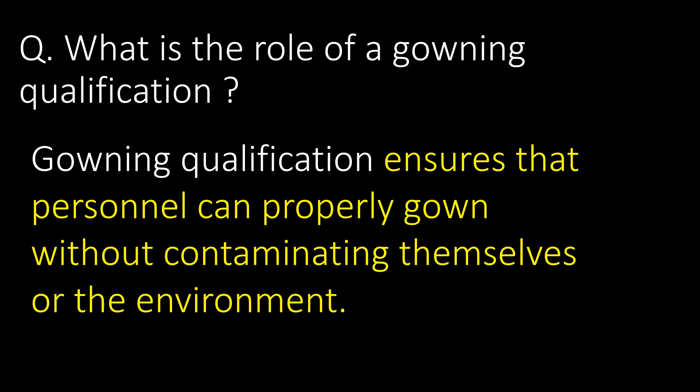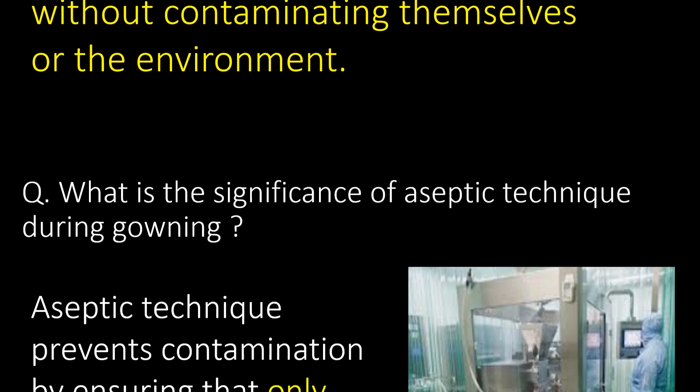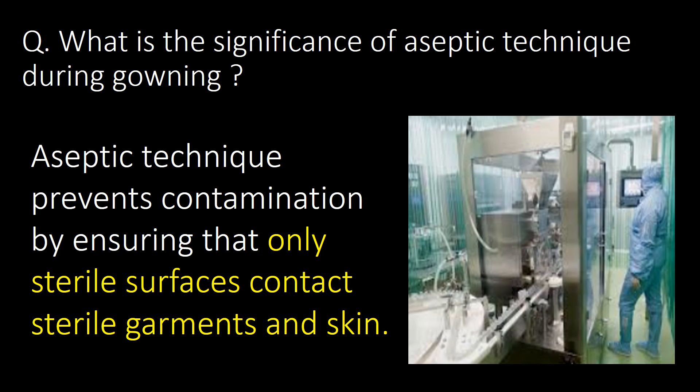What is the role of gowning qualification? Gowning qualification ensures that personnel can properly gown without contaminating themselves or the environment. What is the significance of aseptic technique during gowning? Aseptic technique prevents contamination by ensuring that only sterile surfaces contact sterile garments and skin.